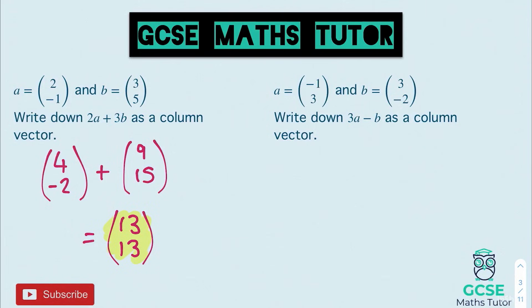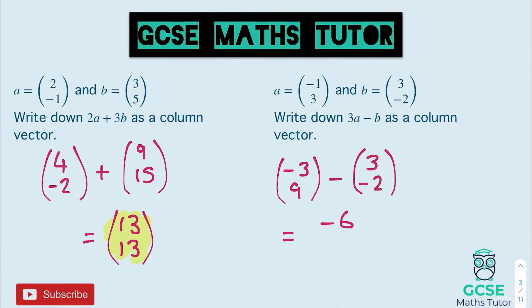For the next one, we've got 3A take away B. Three lots of A gives minus 3 on the top and 9 on the bottom. Taking away one lot of B, which is 3 over minus 2: negative 3 take away 3 gets us to negative 6. On the bottom, 9 take away negative 2 — taking away a negative adds 2 — so 9 add 2 gives us 11. The final vector is negative 6 over 11.